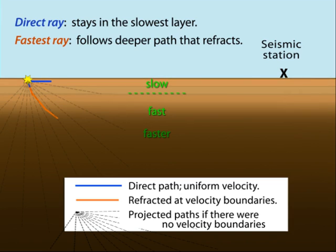We will track two paths from an earthquake. The direct path travels to Station X through the slowest layer.